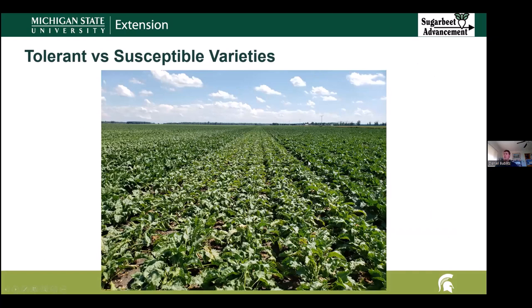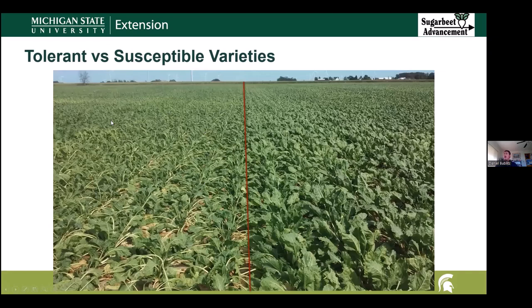Up on the screen, I have a photograph showing a couple different varieties in one of the sugar beet advancement trials from a few years ago. The center variety is a susceptible variety to nematode, and the varieties on either side are both tolerant. You can see the dramatic difference in color and in canopy size between those different varieties. Here's another picture from a sugar beet advancement variety trial comparing a susceptible and a tolerant variety — you can see the susceptible variety on the left is wilting quite a bit more than the tolerant variety on the right.